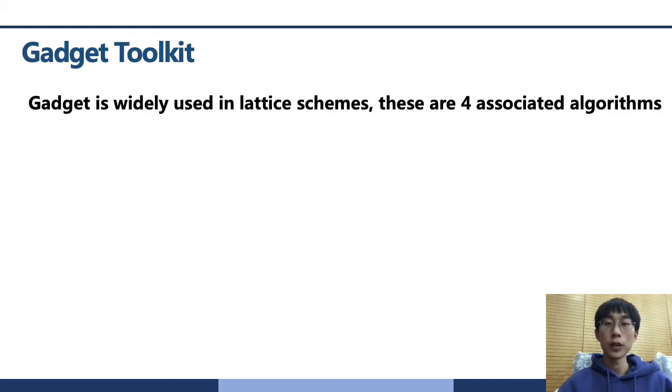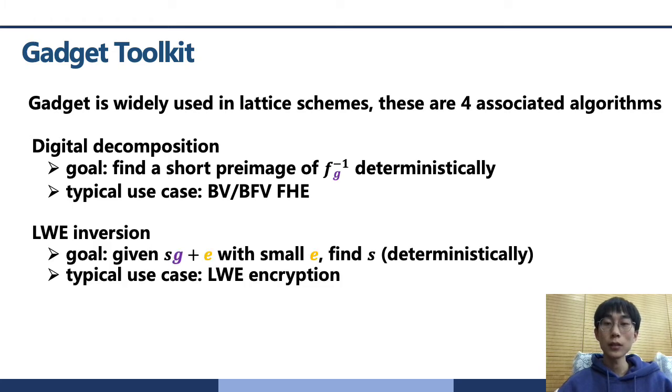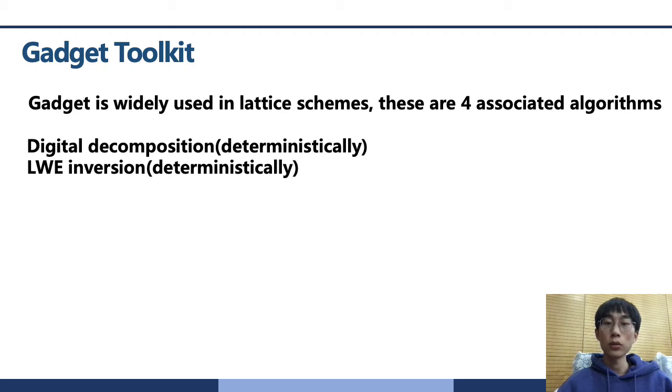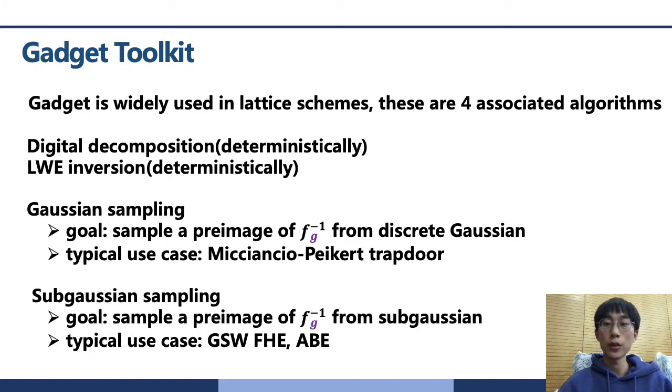Gadget is widely used in lattice schemes. There are four associated algorithms. The most simple one is the digit decomposition, which is typically used in BV and BFV FHE. The second algorithm is LWE inversion, typically used in LWE encryptions. The first two are all deterministic algorithms. There are also two randomized algorithms. The first algorithm is Gaussian sampling. It is used to sample a preimage fG from discrete Gaussian and it's typically used in Micciancio-Peikert trapdoor framework. Then the sub-Gaussian sampling is sampling a preimage of fG from a relaxed version of the Gaussian, a sub-Gaussian, which is easier to sample. It's typically used in GSW FHE scheme and in lattice-based ABE. Our main research is on these two randomized gadget algorithms.